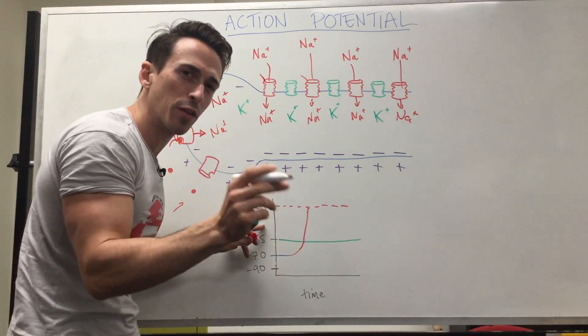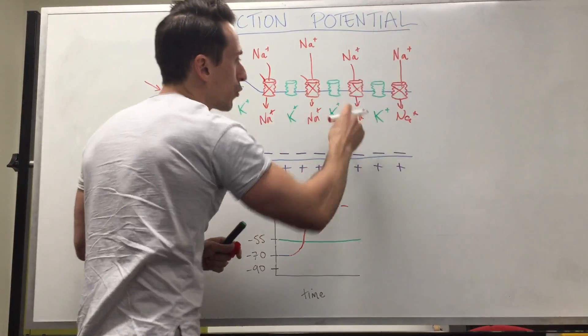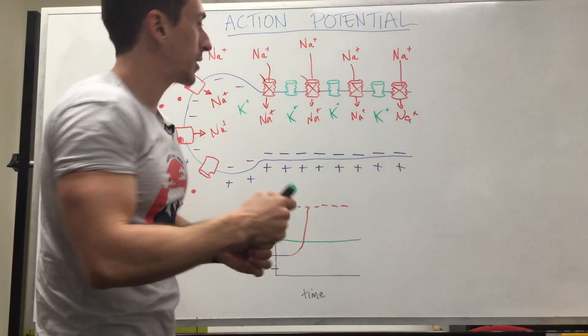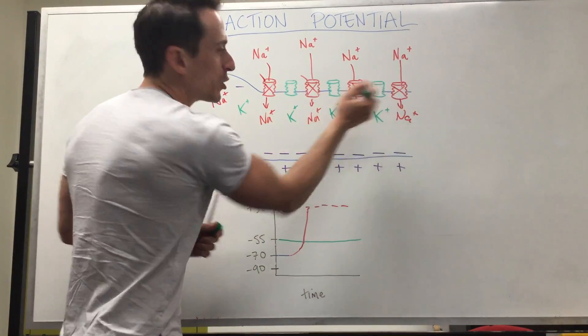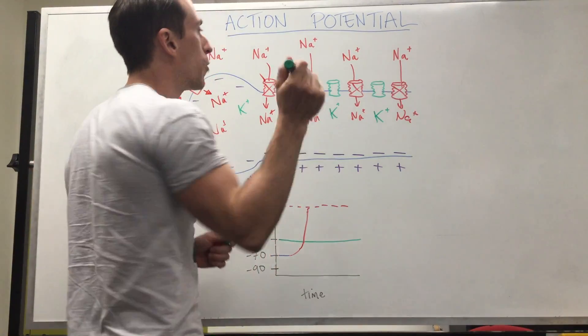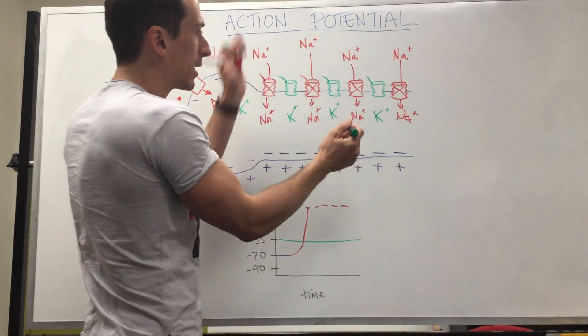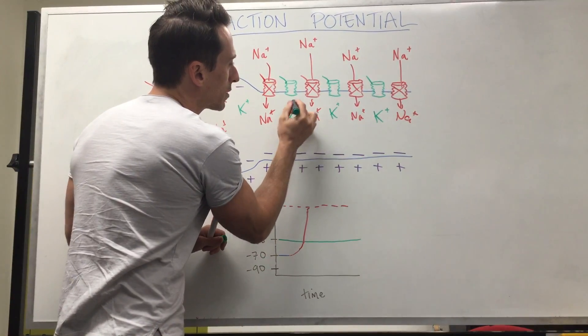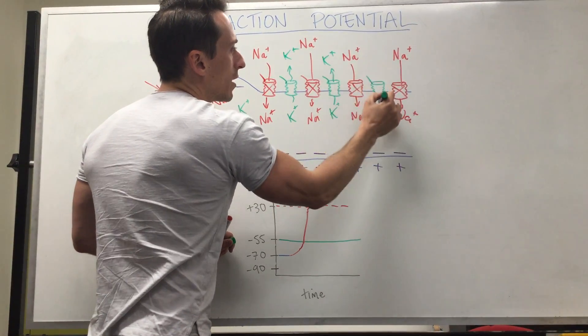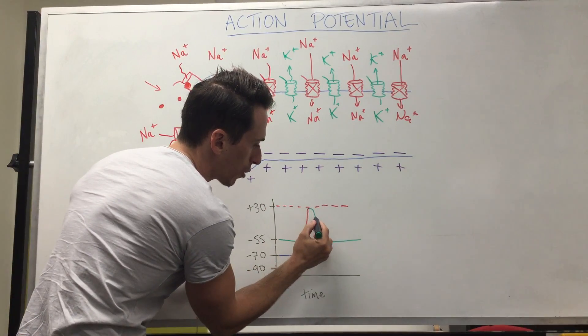Once it hits +30, these sodium channels close. That means the sodium is now trapped inside of the neuron and it's +30 inside the cell. But something else happens that's special: these green channels here, they're voltage-gated potassium channels, and again the key to open this gate is +30. So now all these voltage-gated potassium channels flip their lids open and potassium will diffuse from inside the cell down its concentration gradient outside the cell, taking its positive charge with it.